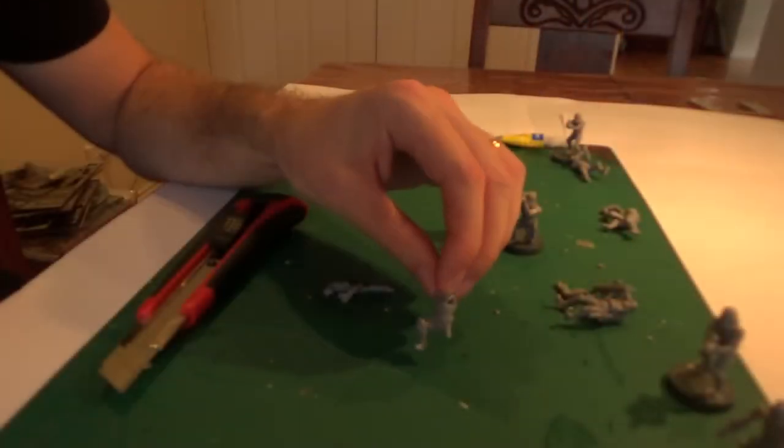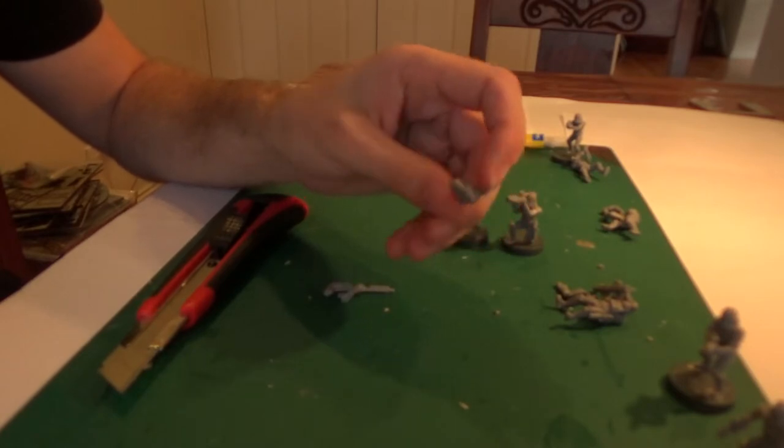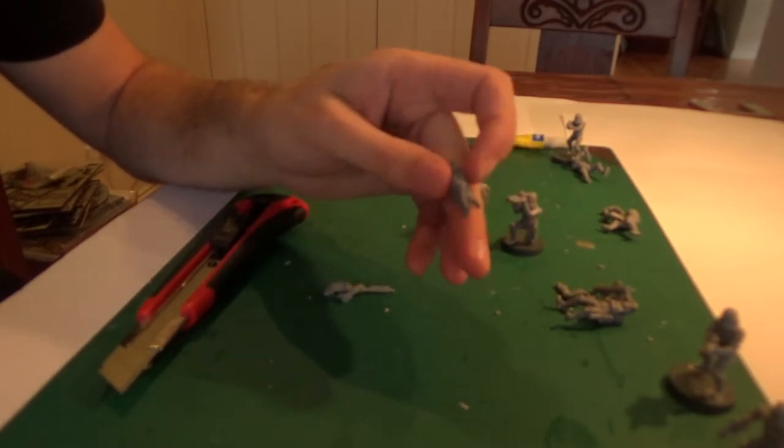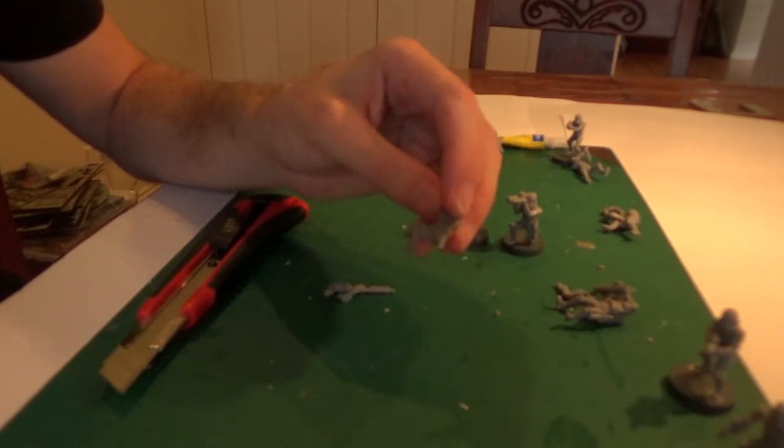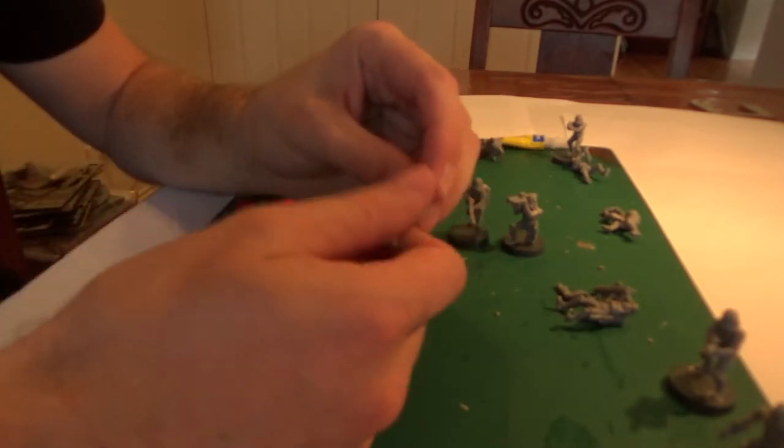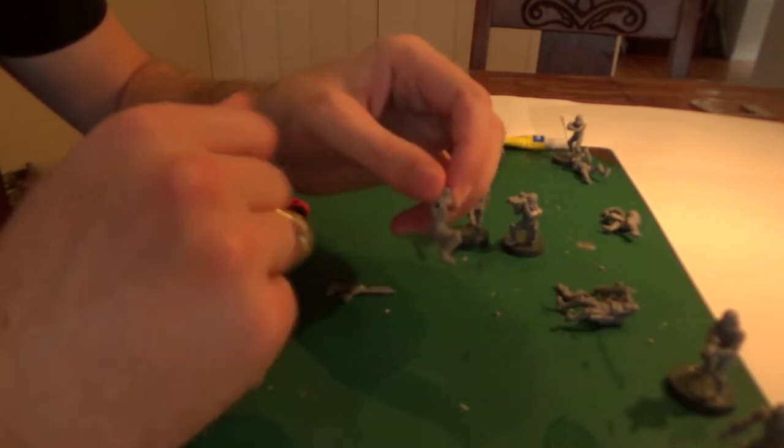So the first thing you want to do when building your models is just give them a quick wash. Warm, hot, soapy water should do it. Put a bit of a quick scrub as well. It just removes any grease and casting agent that might be still present on the model. This can mean that when you go to paint your models, if there is some oil and grease on there, that the paint won't stick as well. So it's a good idea to give them a quick wash.